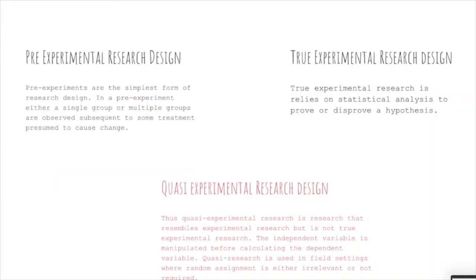The first one is pre-experimental research design. Pre-experimental research designs are the simplest form of research design. These types are observed subsequent to some treatment present to cause change.